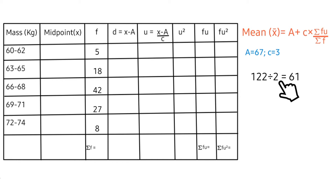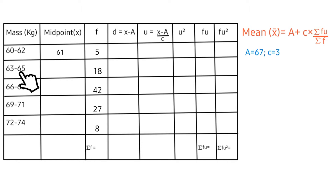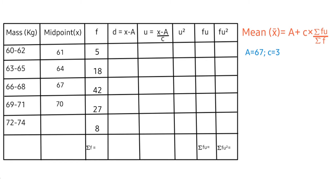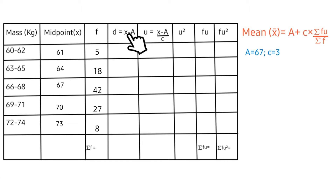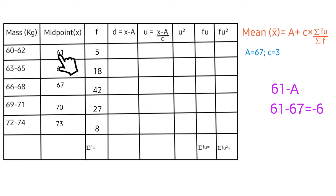For the second midpoint: 63 plus 65 divided by 2. Then 66 plus 68 divided by 2, and lastly 72 plus 75 divided by 2. Now let's proceed to the d column, that is x minus a. We have our x column: 61 minus a — remember the a value is 67 — gives minus 6.